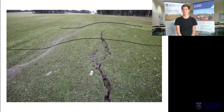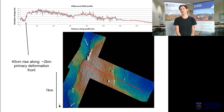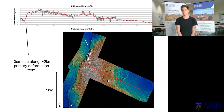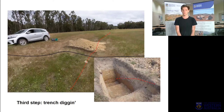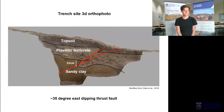We also flew a drone around and collected orthophotos to put together a digital elevation model showing the very fine detailed topography of the area. You can see a line in that bottom image showing the length of the scarp — a good five kilometres in length. If you can imagine a five-kilometre area of land being lifted by 40 centimetres, there's a lot of energy involved. The third step is to do a bit of manual labour — we spent about a day digging a trench to see what happened in the cross-section of the landscape around the fault scarp.